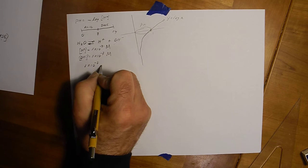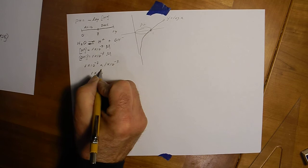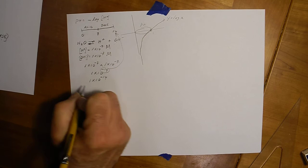Notice this: 1 times 10 to the minus 7 times 1 times 10 to the minus 7 is 1 times 10 to the minus 14th. Wait a minute. 14? We've seen that. And this number, 1 times 10 to the minus 14th is called Kw, the constant for water.